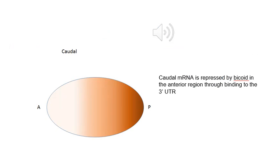Here we have depicted caudal protein. Caudal protein will also define the posterior region of the embryo even further. This gradient is set up through the repression of Bicoid in the anterior.